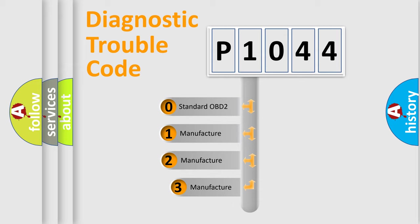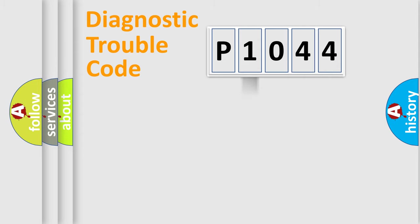If the second character is expressed as zero, it is a standardized error. In the case of numbers one, two, or three, it is a more specific expression of the car-specific error.